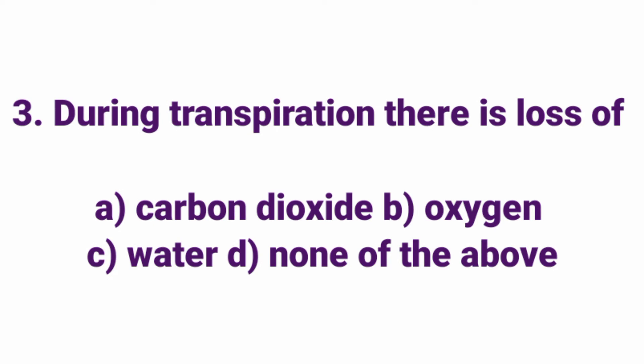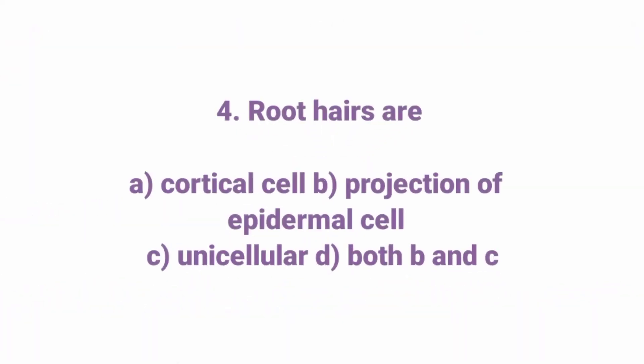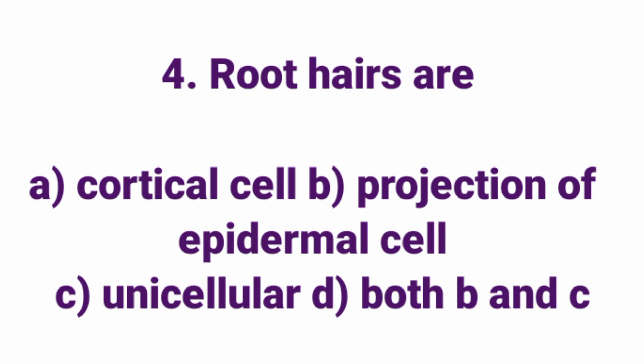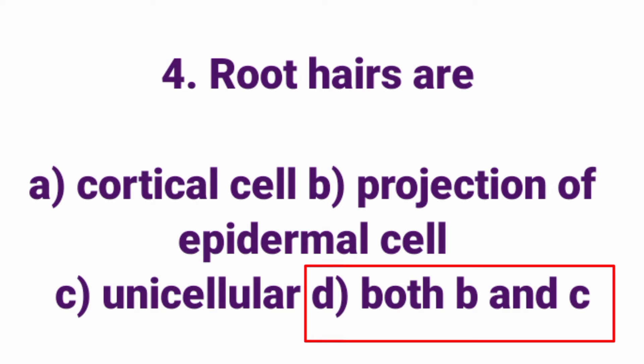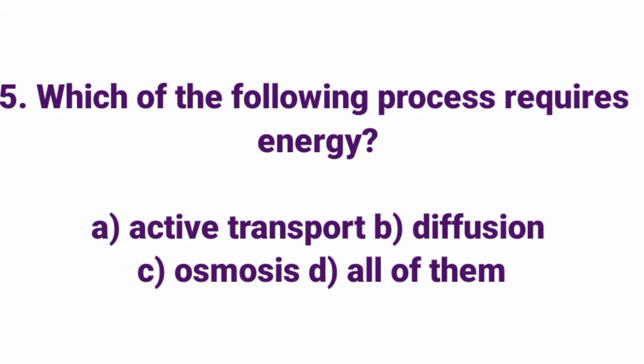During transpiration there is loss of — Answer: Option C, Water. Root hair is — Option D: Both B and C — a projection of epidermal cell and unicellular. So Option D, Both B and C, is the answer.